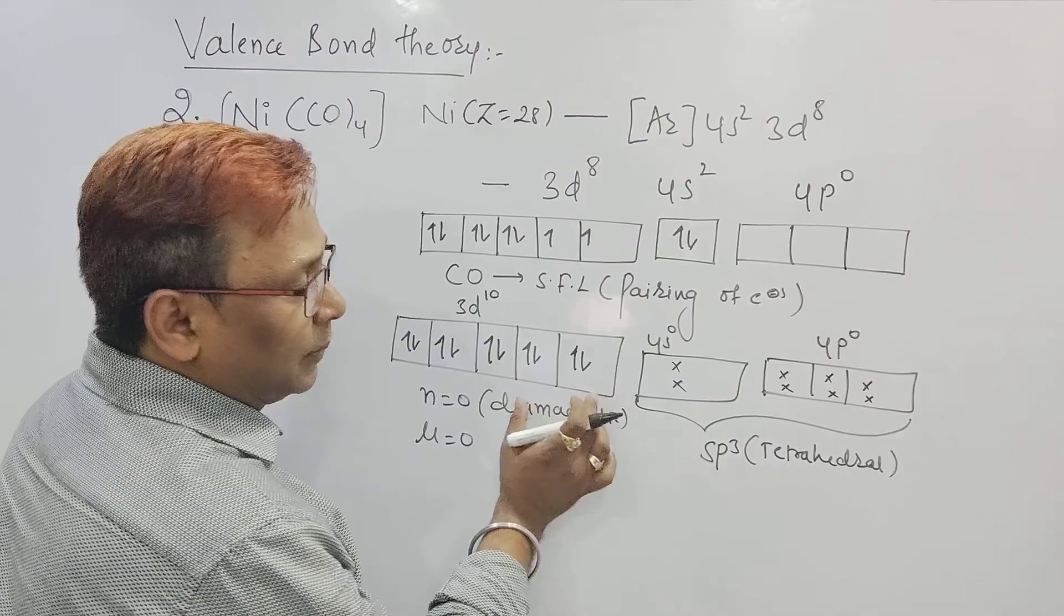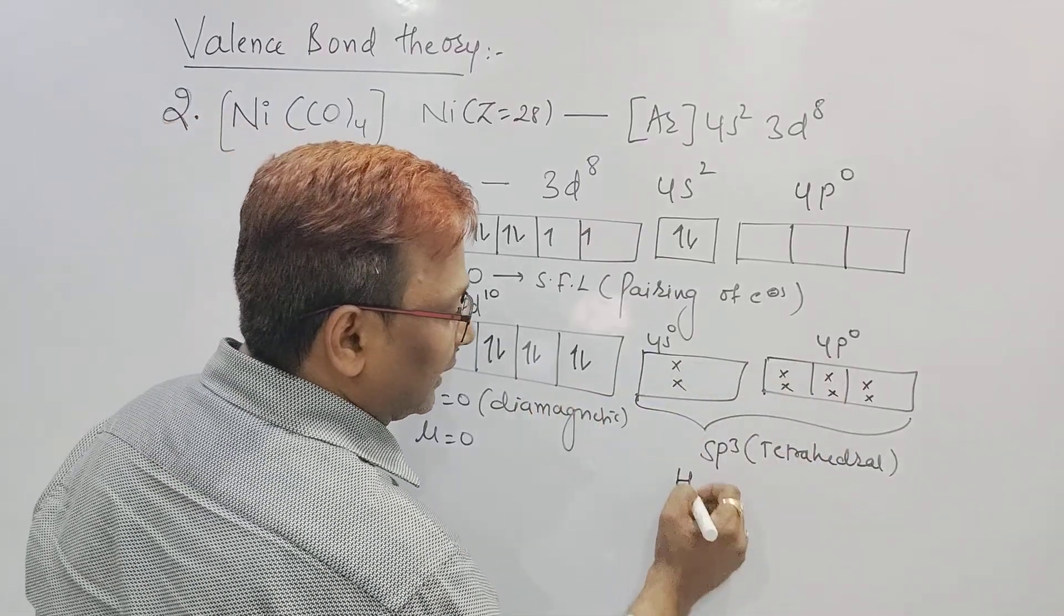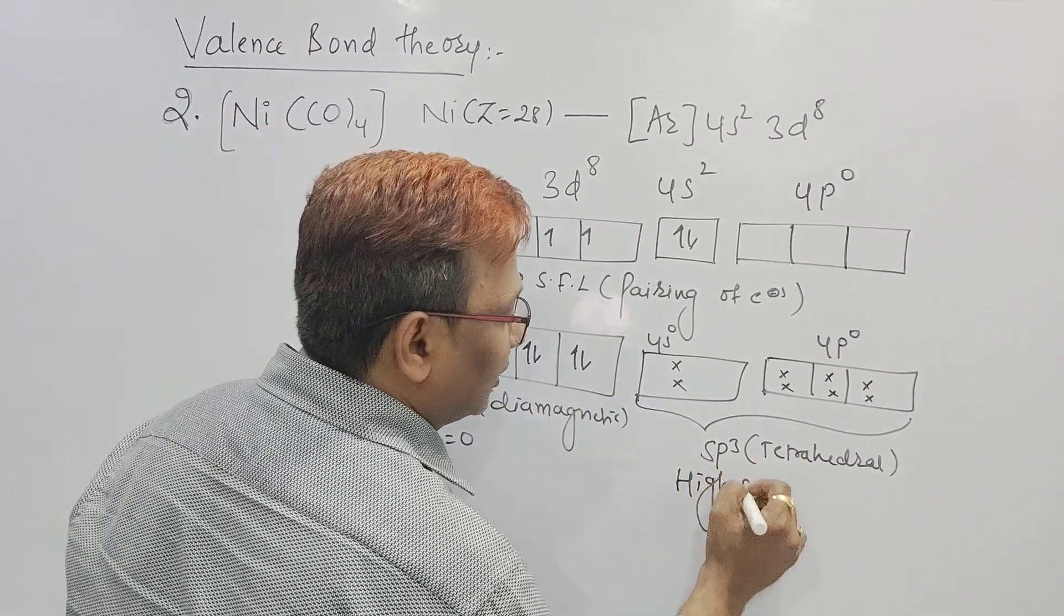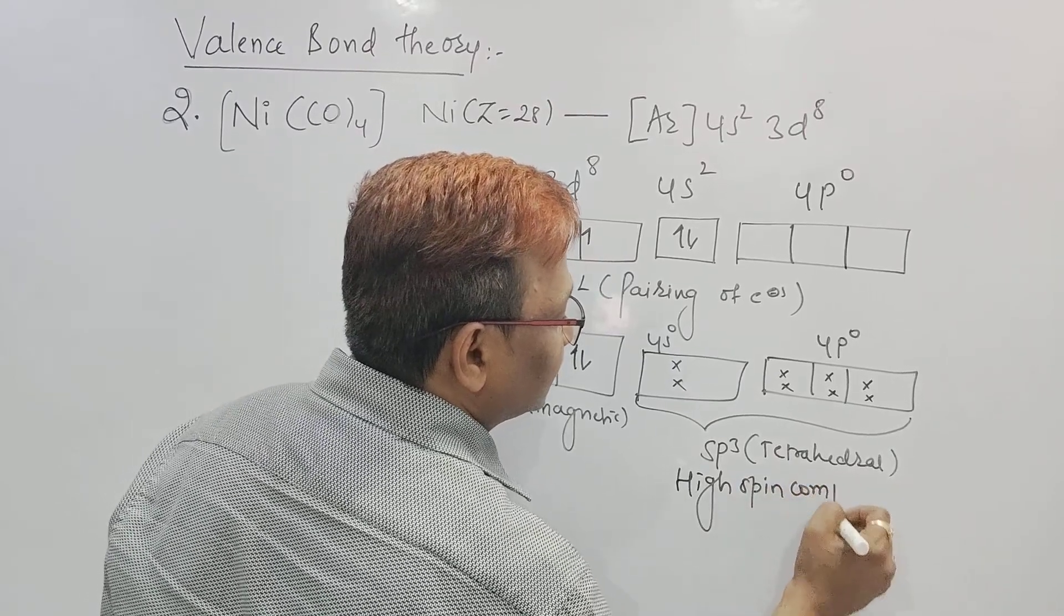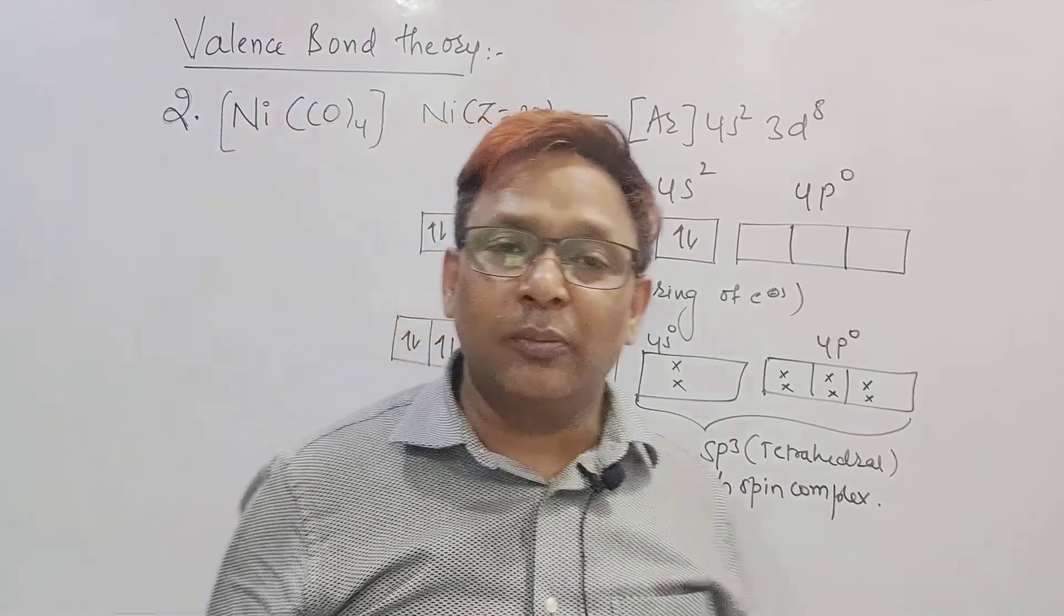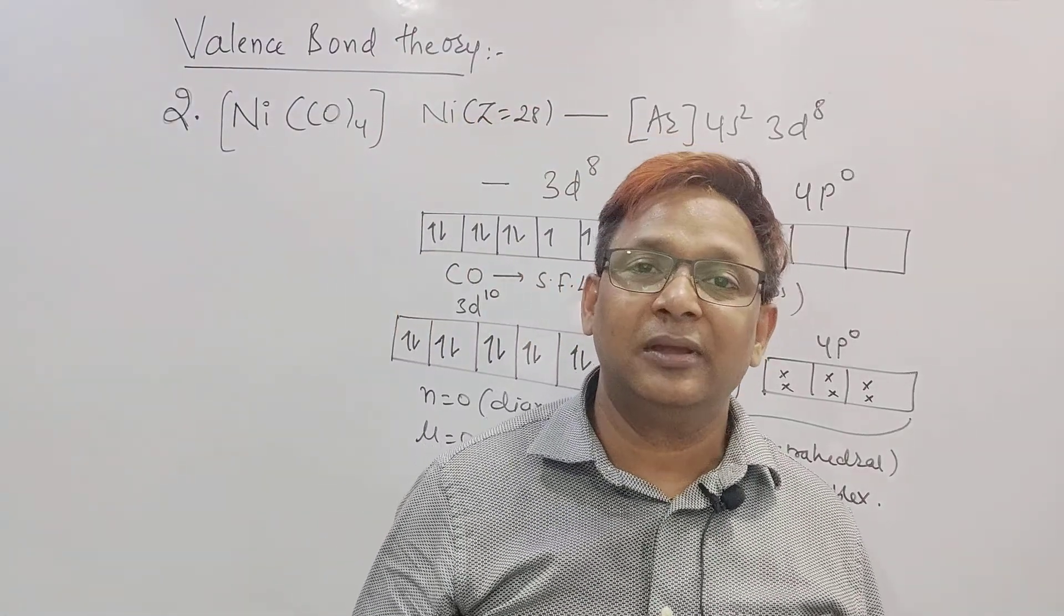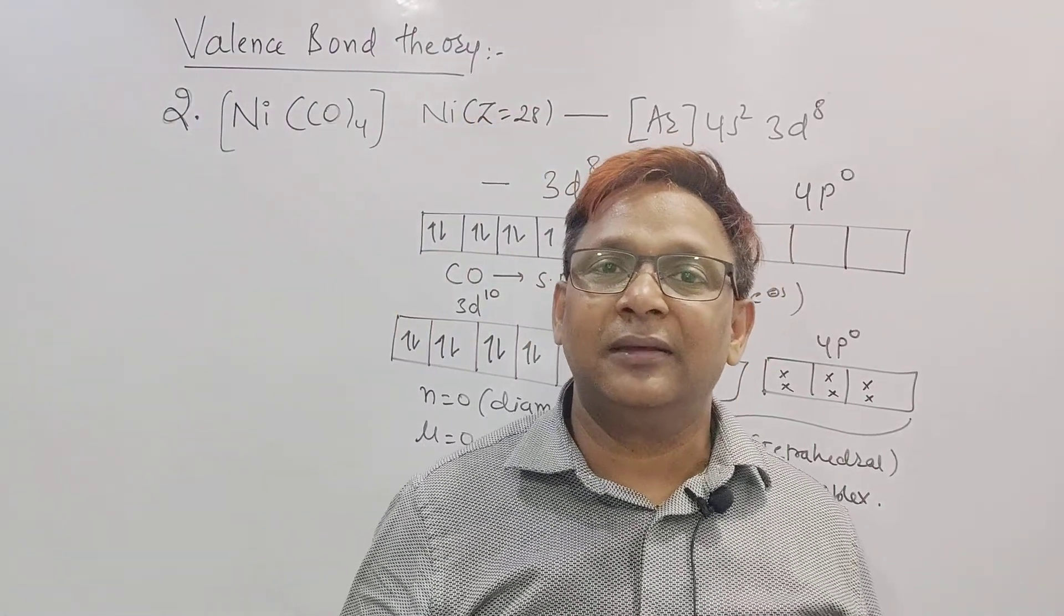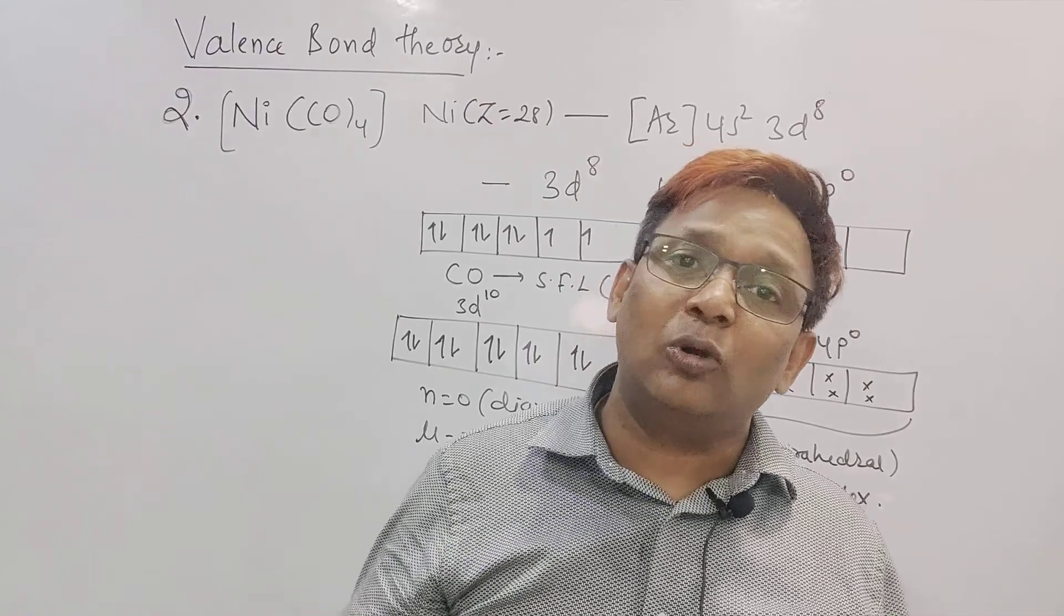And you can see here, still inside no d orbital involved, only outside. So again we can say this will be called as a high spin complex. So it is one more example. We did two based on Ni. First one, Ni with Cl4, so Cl is a weak field ligand. Now Ni with CO taken 4 times. CO is a strong field ligand.